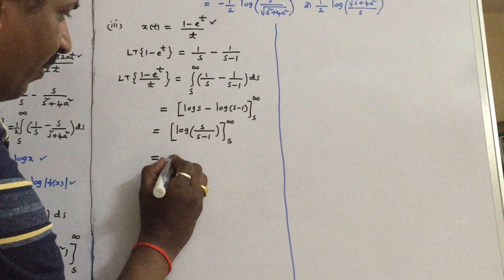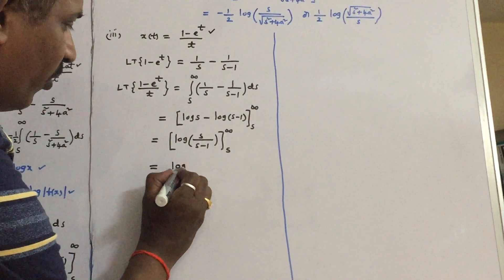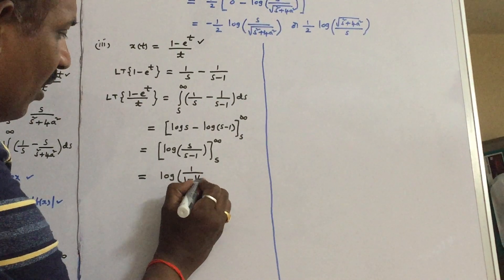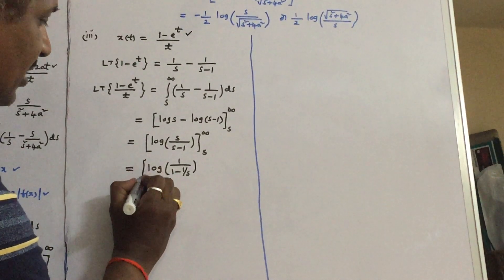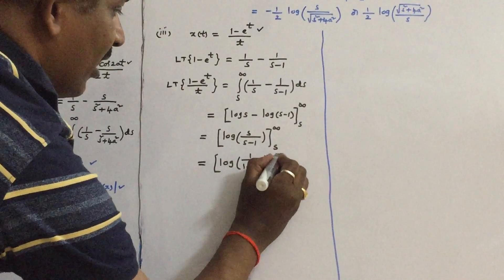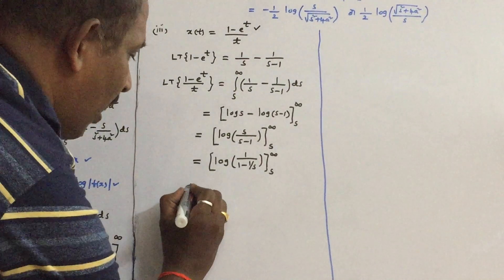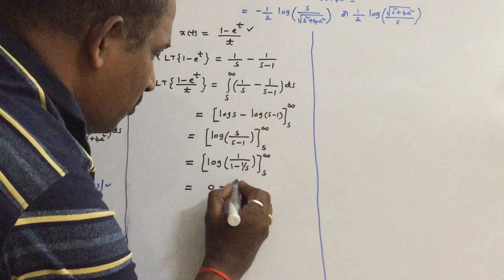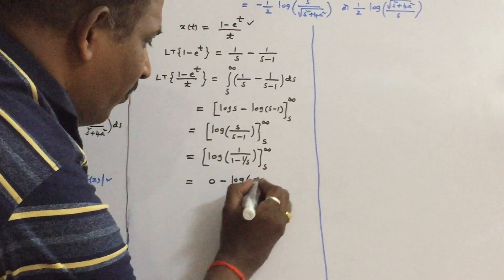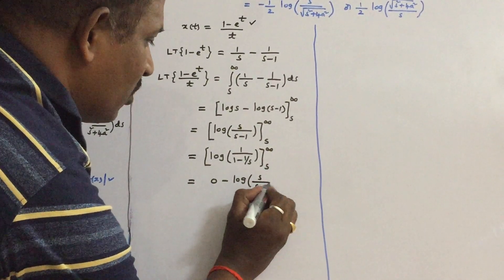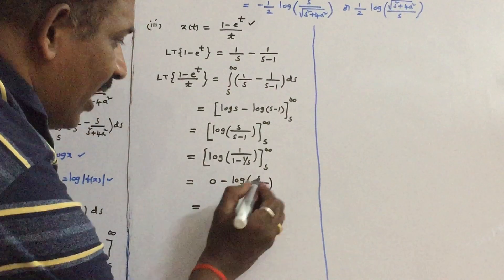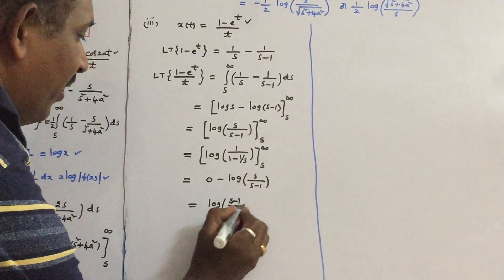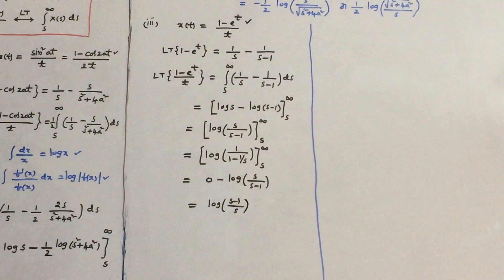Before substituting the upper limit, take S as common in numerator and denominator, which gives log[1/(1 − 1/S)] from S to infinity. Substituting the upper limit: 1/infinity → 0, so log(1) = 0. Substituting the lower limit gives S/(S−1). Taking the minus sign inside, the answer is log[(S−1)/S]. This is the answer for the third problem.